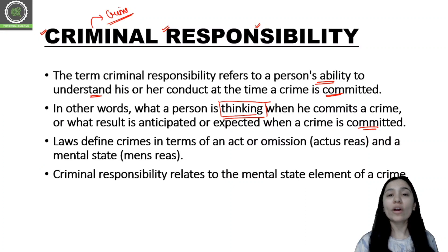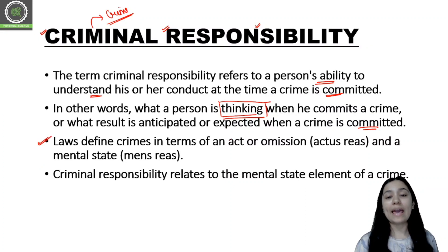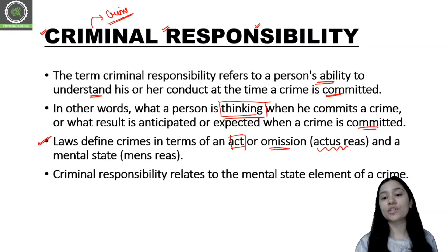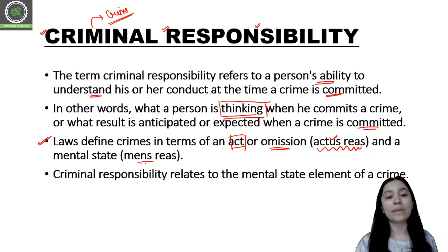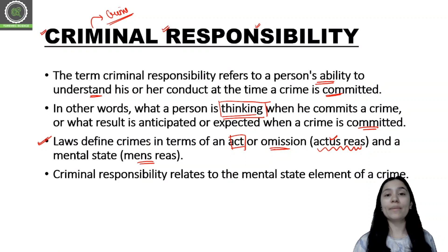From a legal point of view, a crime is an act or omission — actus reus — which involves a serious act and a mental state, that is mens rea. So we have already studied the elements of crime.